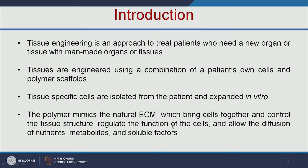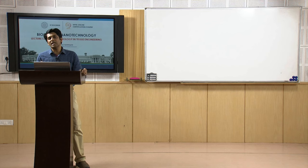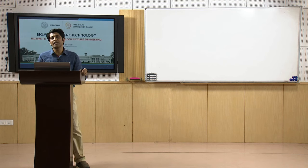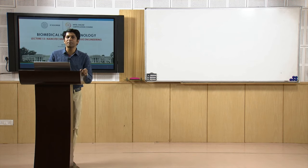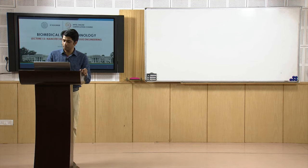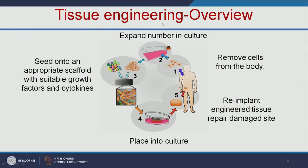The scaffold acts like a support — it allows the cells to grow and provides support like the extracellular matrix. It also allows nutrients to permeate through its porous structure. This is the overview of tissue engineering.